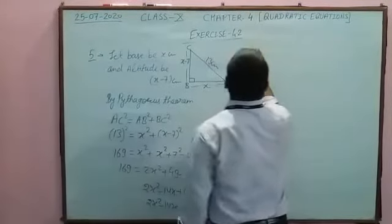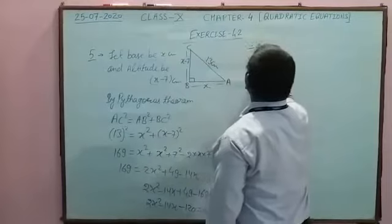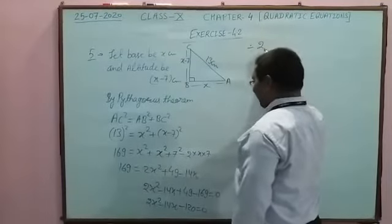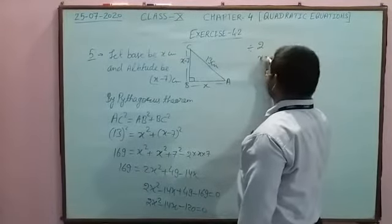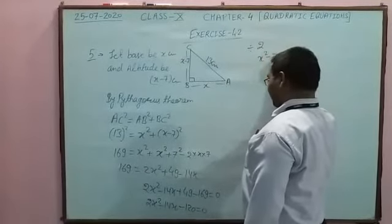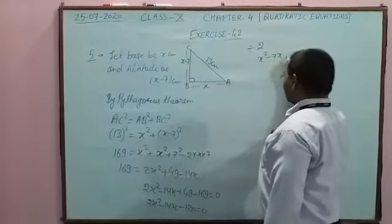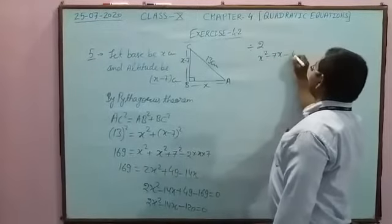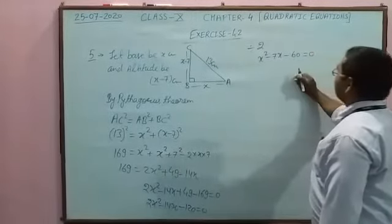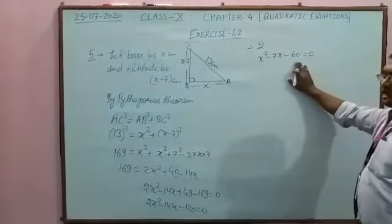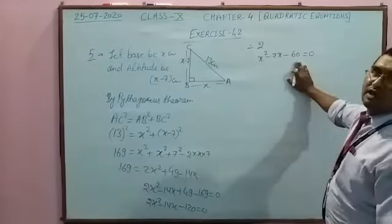Dividing the equation by 2, we get: x² − 7x − 60 = 0. Now we have a quadratic equation to solve.